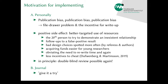The first question is what was the motivation for implementing? As Andrew said, there are different levels here. For us, we had publication bias at the center, together with the file drawer problem that was already brought up, and the incentive for not writing up papers that don't produce exciting results. That was the main focus, but of course there are positive side effects. One would be better targeted use of resources — if you're the 20th person to try to demonstrate a non-existent relationship, that's bad, and you're only going to do that because there are 19 others you don't know about.